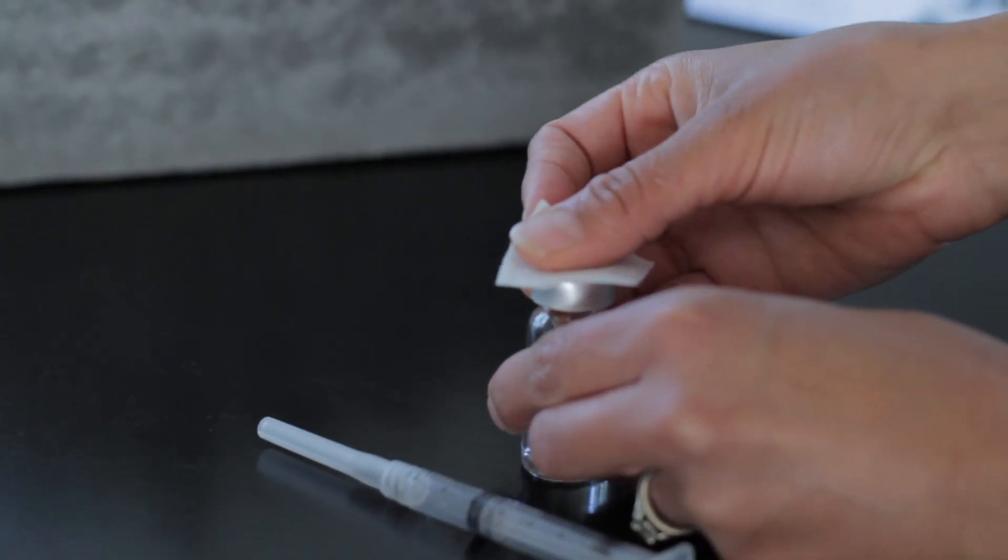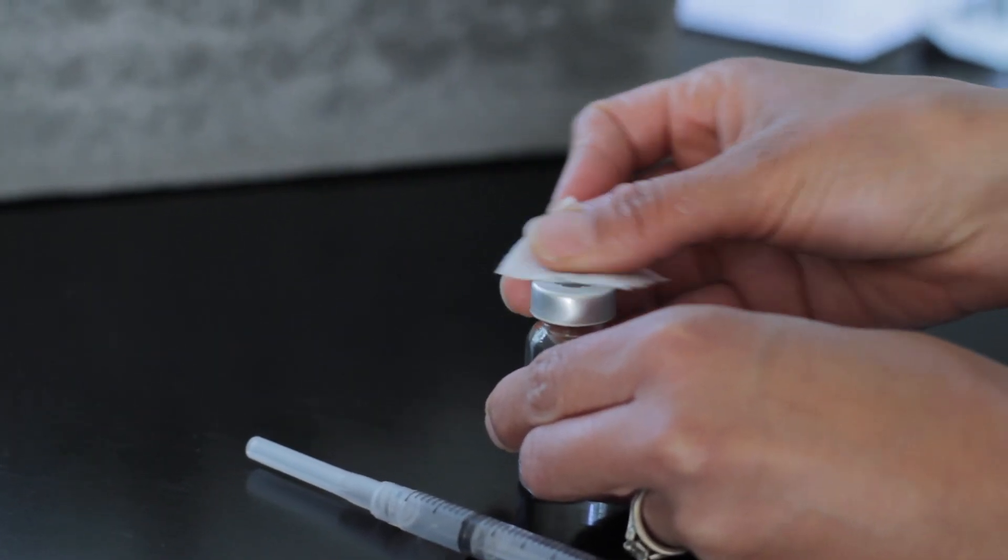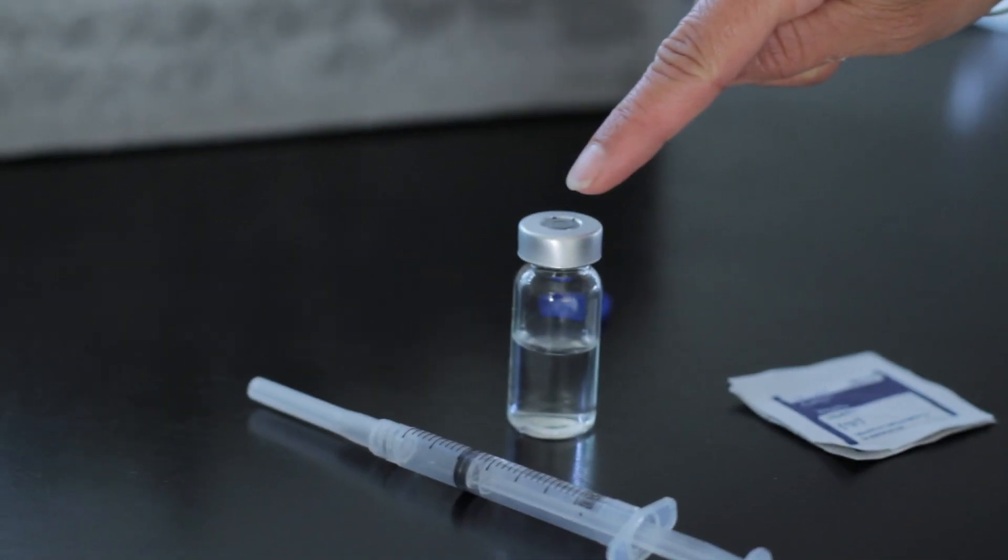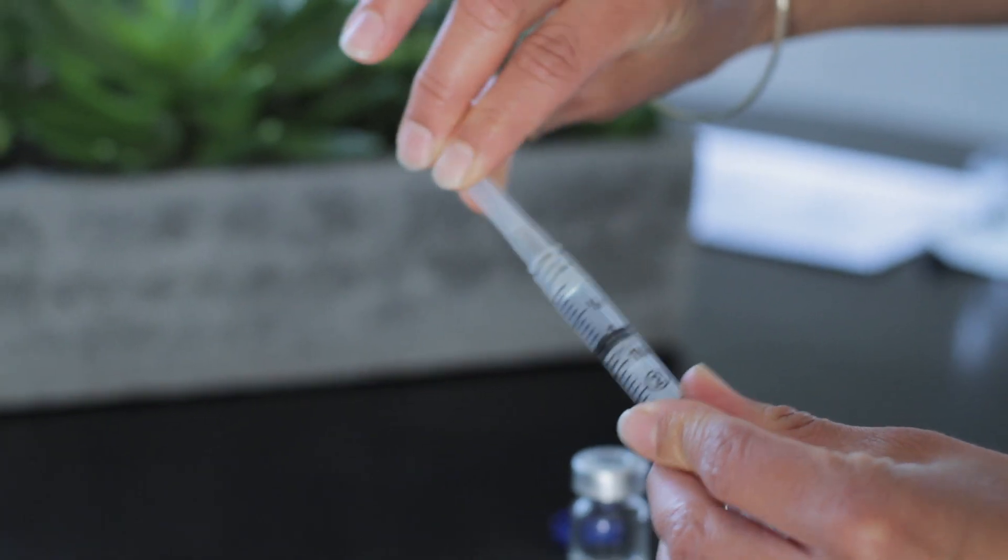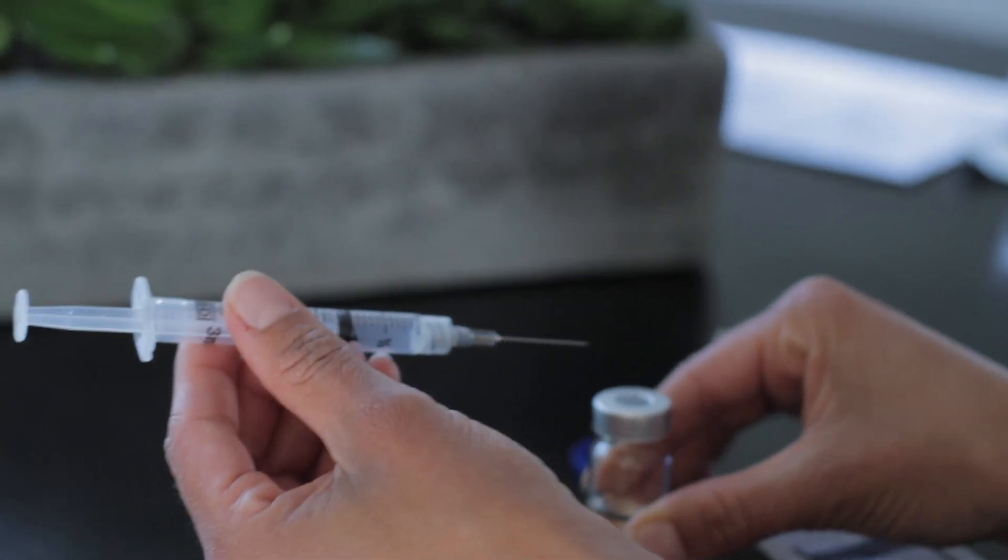We are going to clean the top of the vial for 30 seconds. When we inject, it's going to be in the bull's eye, right in the center. So you take off the cap. You're going to hold the needle in a 45-degree angle with the bevel up.